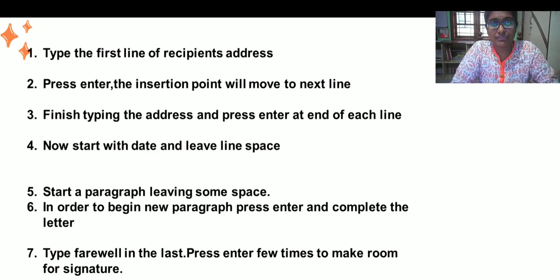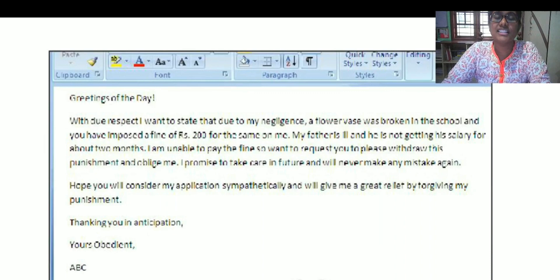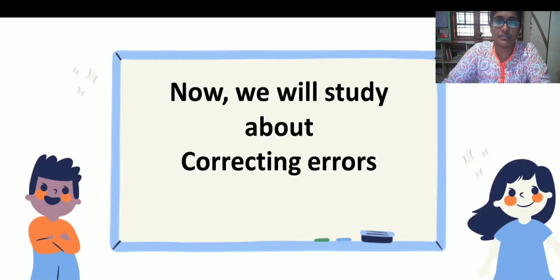Start with the paragraph now. It is really simple as writing in a book only. But the only thing is in order to move to the next line, we are pressing enter. Now begin writing a paragraph. After each paragraph, press enter in order to make a new paragraph. Type the last sentence and press enter a few times in order to give the space for signature. Now your letter is ready. This is how a letter will look.